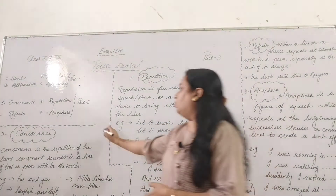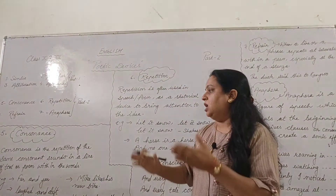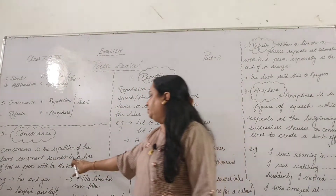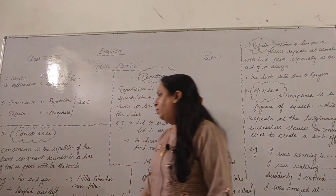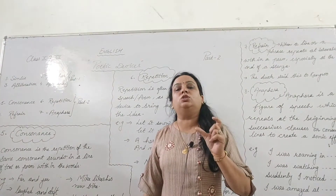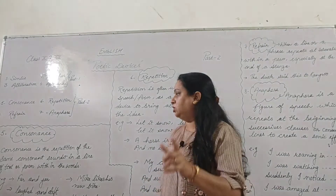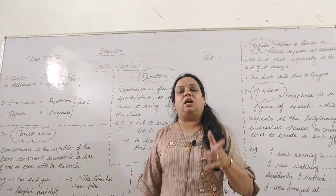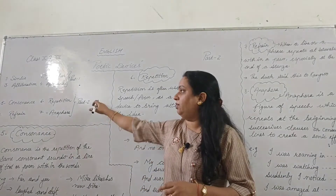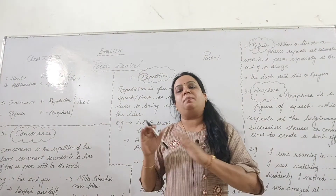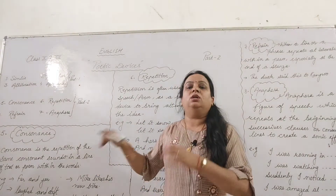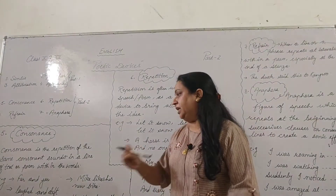Let us understand with the help of some examples. When we talk about the 5th poetic device — consonance — it is the repetition of the same consonant sounds within the words in a line of text or poem. We have to check the sounds of the consonant alphabets within the words. Unlike alliteration, it does not have to be at the start of the word; it may be within the word.